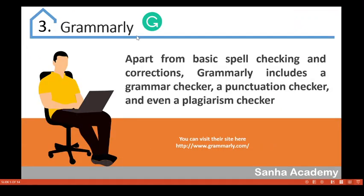Number three is Grammarly — a really amazing tool. Apart from basic spell checking, Grammarly can check and correct your spelling and grammar. For example, if you write an article and want to proofread it, Grammarly can help you identify mistakes in spelling and correct them, and also help you correct your grammar to a more professional level.